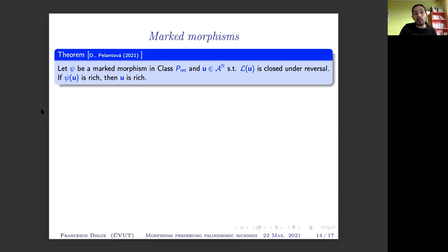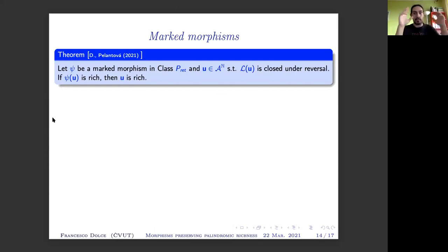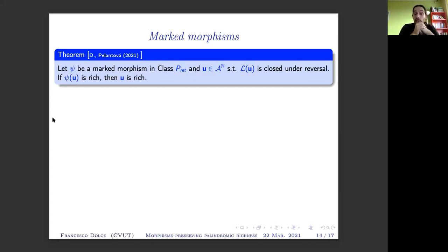We proved several results on marked morphisms in class P-rite. One important result: if we start with a morphism that is marked and in class P-rite, and consider a word whose set of factors is closed under reversal, then if the image of this word is rich, the word itself is rich. So we have one of the two implications analogous to what was proved for Arnoux-Rauzy morphisms.